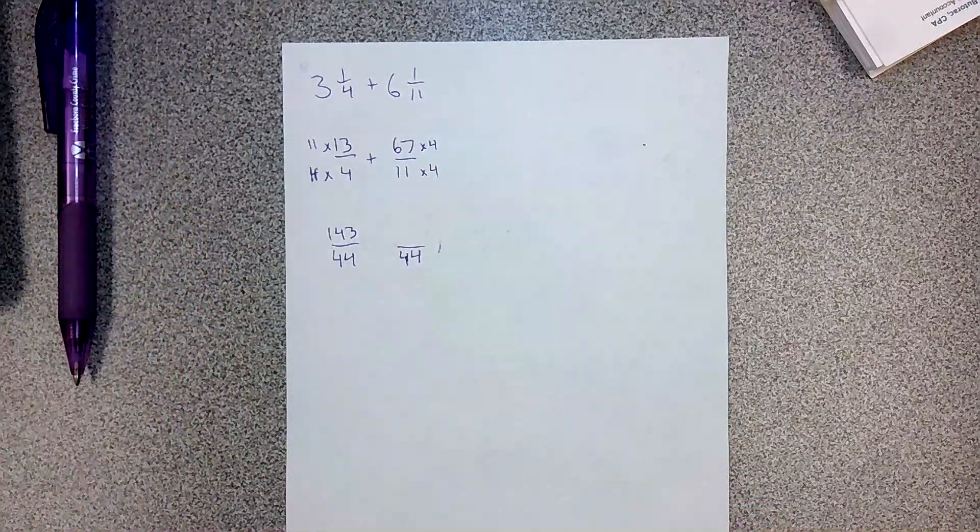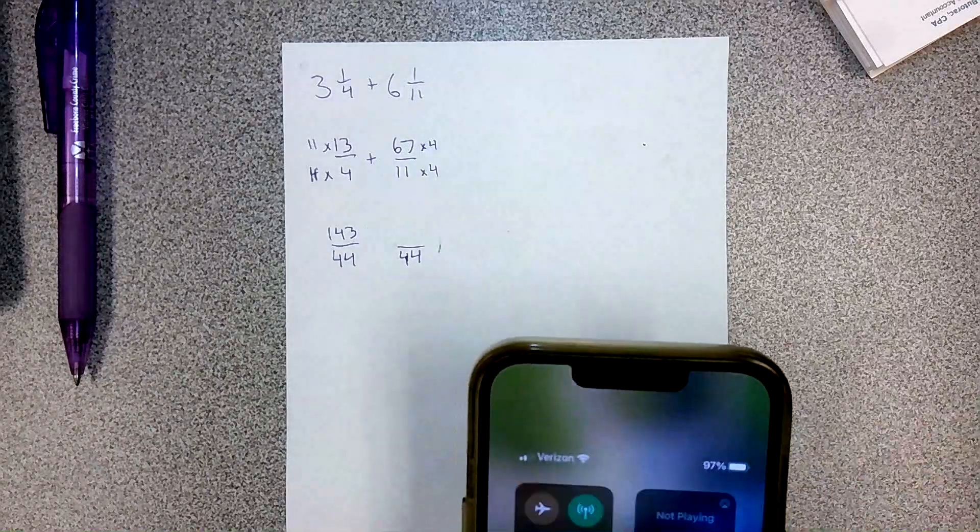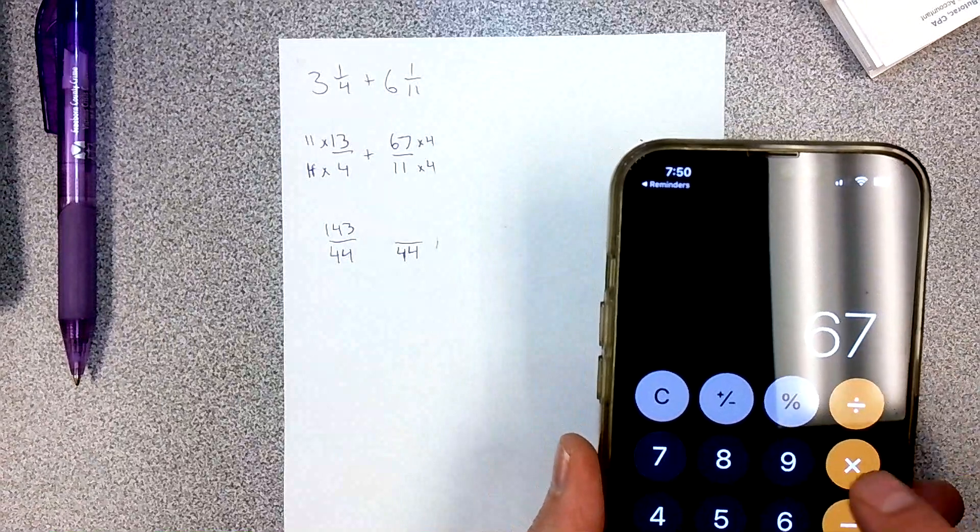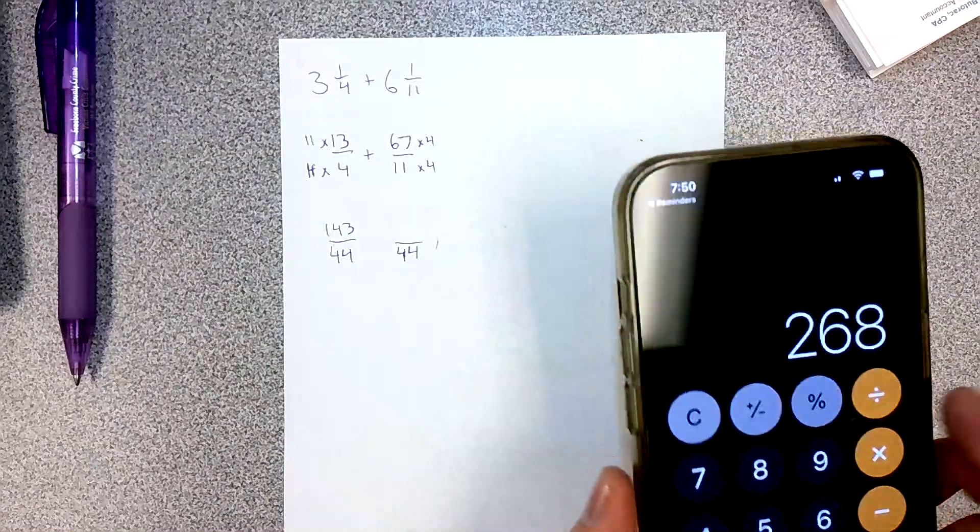I don't know, it's early. I'm going to grab a calculator. Let's see. So I'm going to do 67 times 4, 268. There you go.